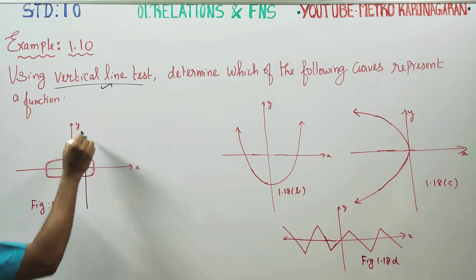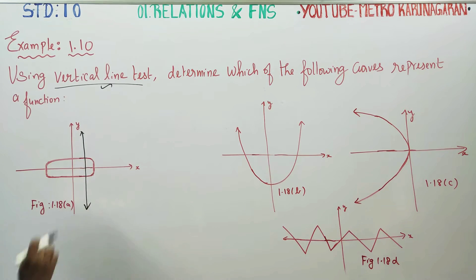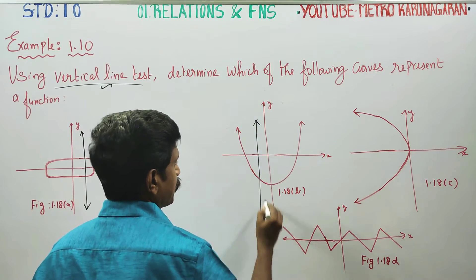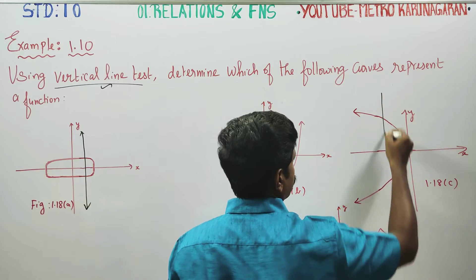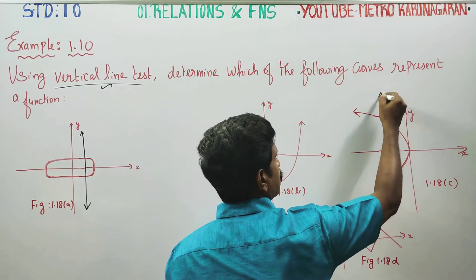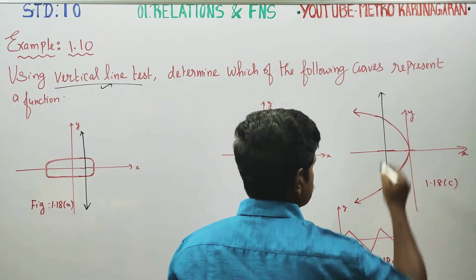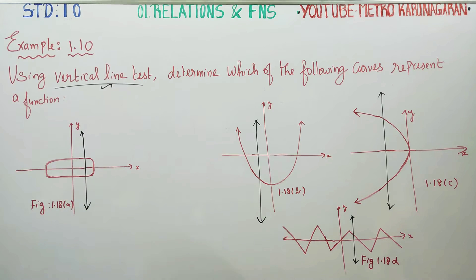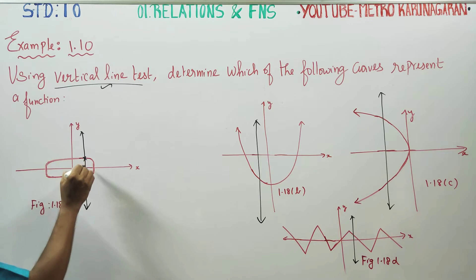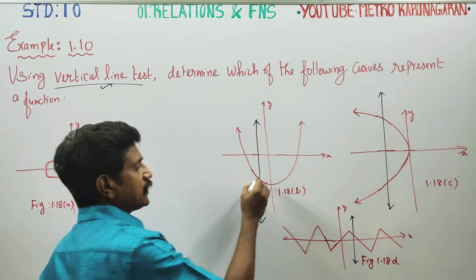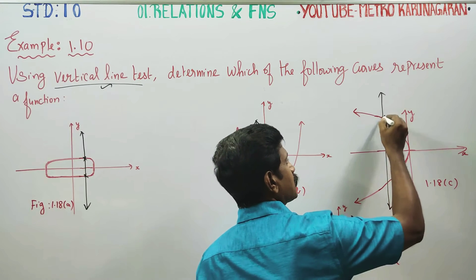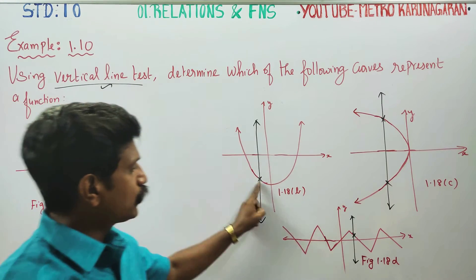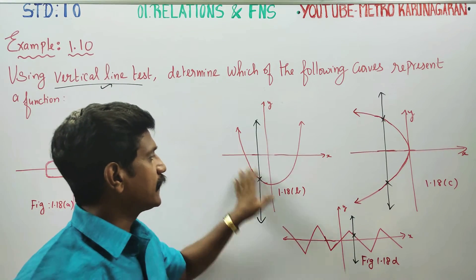This is a vertical line. So this vertical line cuts 2 points on this curve. This curve is cut at 1 point. This curve is cut at 2 points. When a vertical line cuts exactly 1 point, this curve is a function.